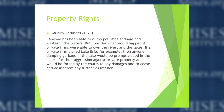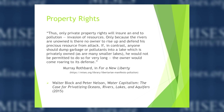Murray Rothbard addresses this through property rights again. He asks: suppose a private firm owned Lake Erie. Anyone dumping garbage in the lake would be promptly sued in court for aggression against private property and forced to pay damages and cease and desist. Thus, only private property rights will ensure an end to pollution. Only because rivers are unowned is there no owner to rise up and defend that precious resource from attack. If anyone dumps pollutants into a privately owned lake, the owner would come roaring to its defense. I'll also mention a recent book by Walter Block and Peter Nelson: 'Water Capitalism: The Case for Privatizing Oceans, Rivers, Lakes, and Aquifers.'